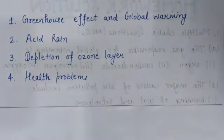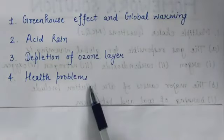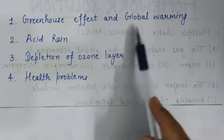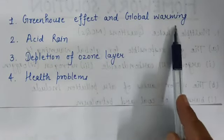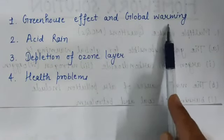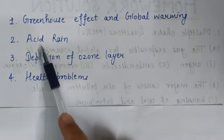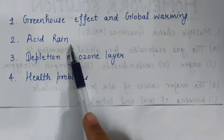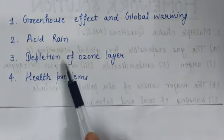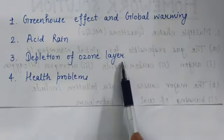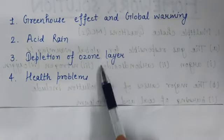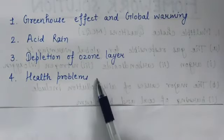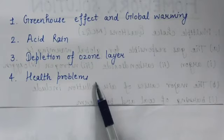Students, these are the four effects of air pollution: first, greenhouse effect and global warming, meaning increasing the earth's temperature; second is acid rain; third is depletion of ozone layer; and last is health problems. These are some bad effects of air pollution.